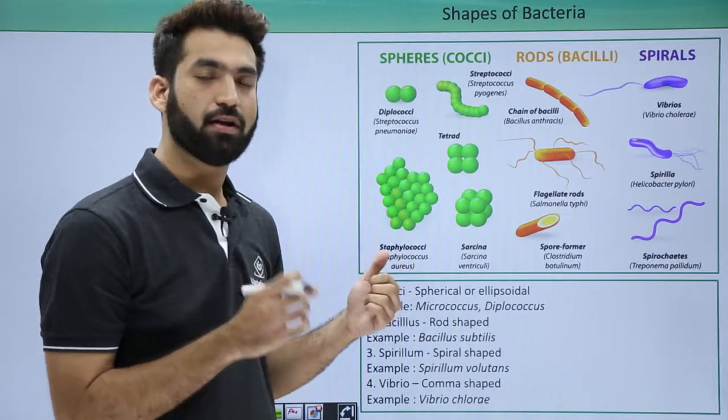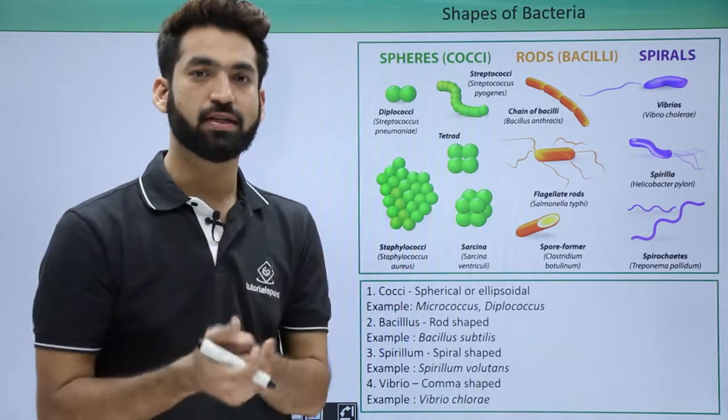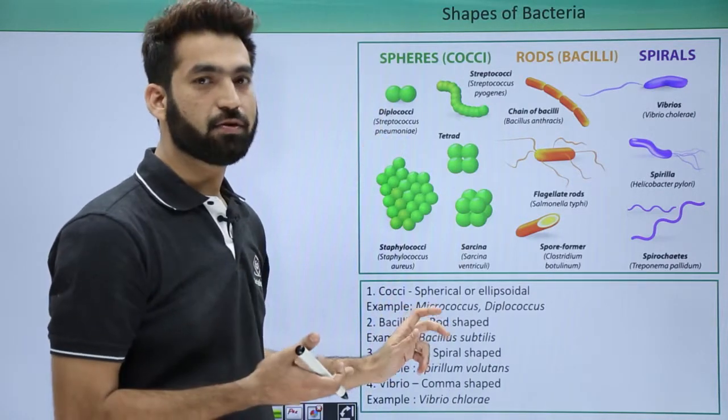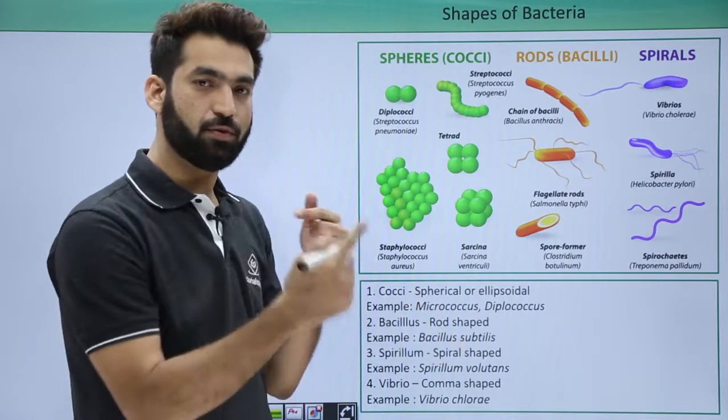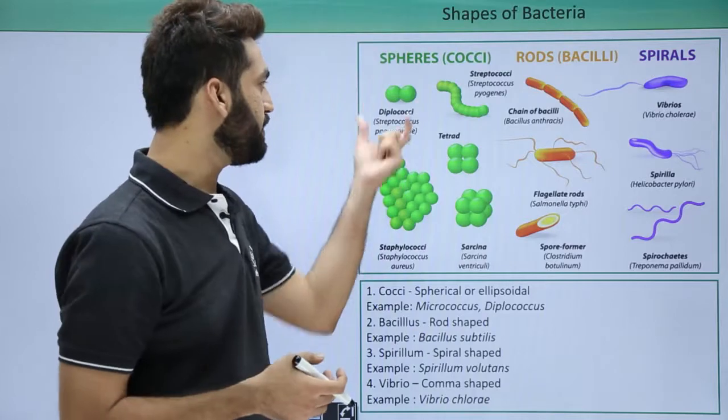Bacteria can remain single or sit in colonies. If it is single, it is called Micrococcus. When two bacteria come together, it is called Diplococcus.